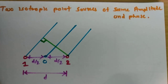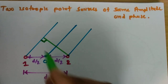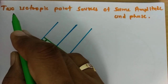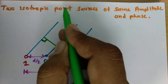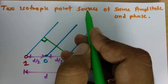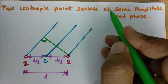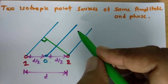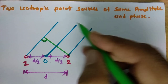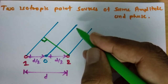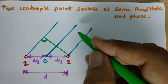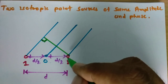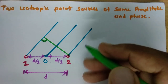Welcome to the Antenna and Wave Propagation playlist. In this session, I will explain two isotropic point sources of same amplitude and phase, and we will calculate the electric field produced by a two-point-source array.